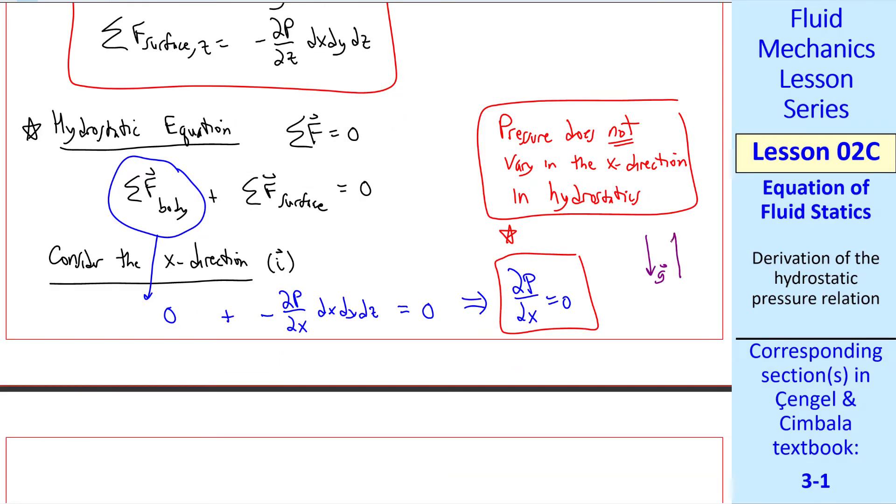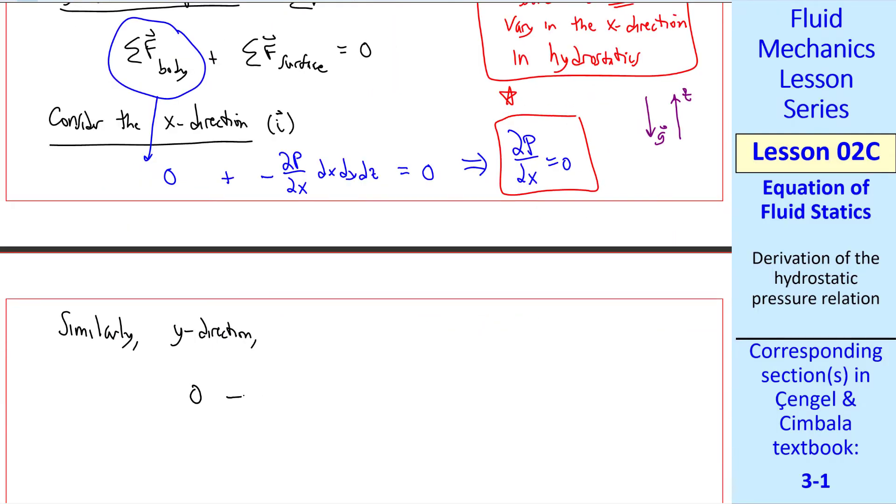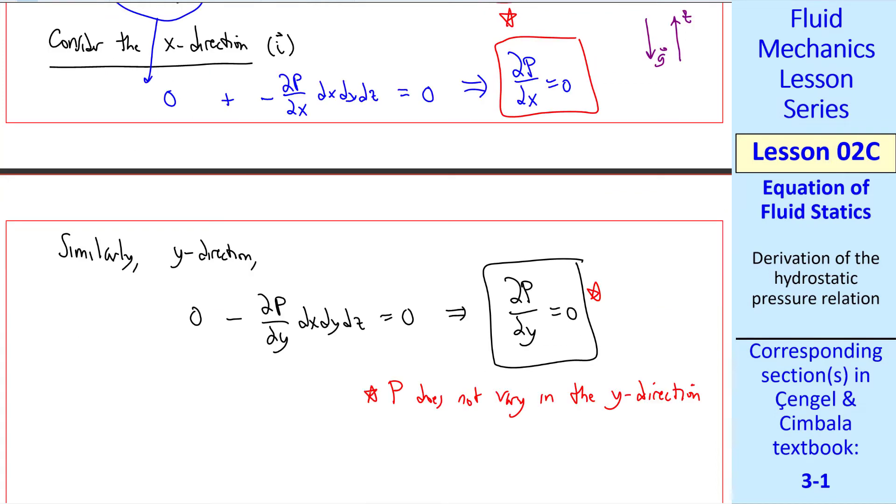Similarly, in the y direction, zero minus del p del y dx dy dz must equal zero. So del p del y equals zero. We conclude that p does not vary in the y direction either in hydrostatics.